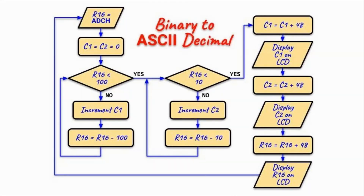The algorithm used to convert from binary to ASCII decimal is shown here. We start by copying the 8-bit digitized value into register R16. Then we assign two counters with an initial value of 0. Then we check if R16 is less than 100. If not, we increment the first counter and subtract 100 from R16.